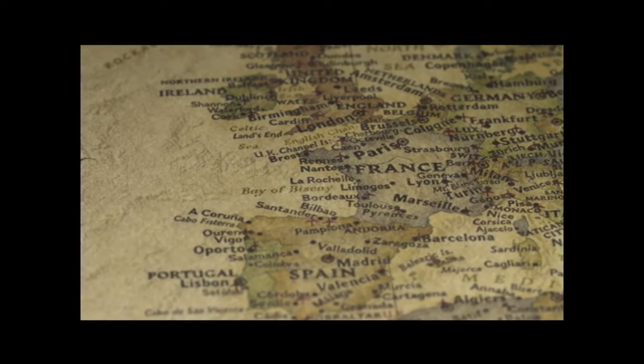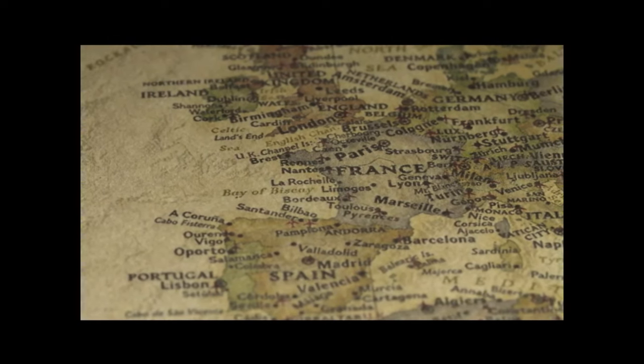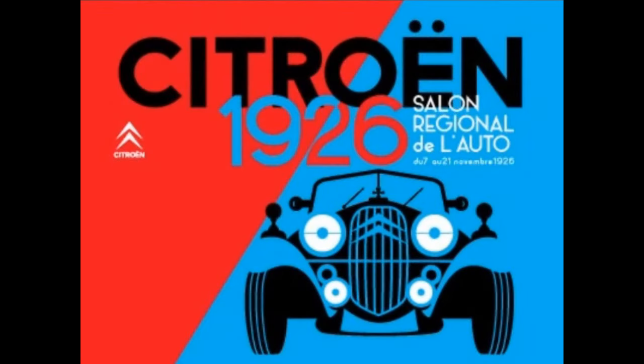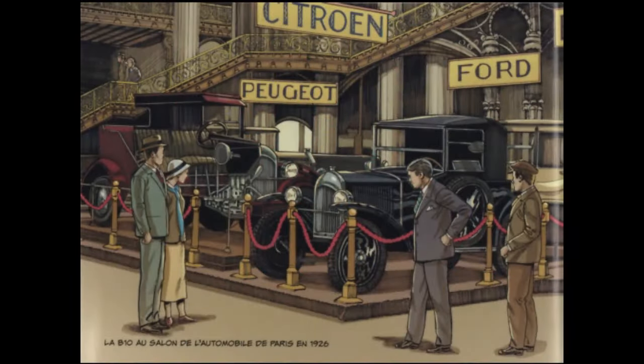Our story begins in France at the 1926 Paris Auto Show. French industrialist and automotive pioneer André-Gustave Citroën presented his company's all-new B14 line of automobiles in a display alongside Peugeot and Ford.